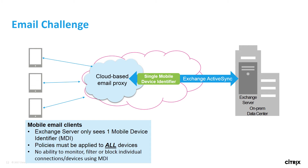When using cloud-based proxies for mobile email clients, the on-prem Exchange server only sees one mobile device identifier, which means if you apply policies to one device, they are applied to all devices. This results in the inability to monitor, filter, or block individual connections or devices using a mobile device identifier. It is also common for cloud-based email proxies to cache large amounts of user email data in the cloud, which is another security risk.